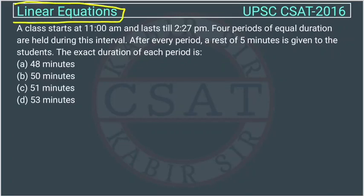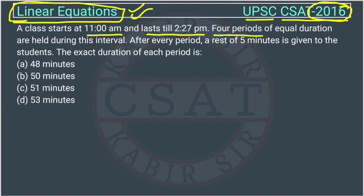This is a linear equation type of question asked by UPSC in the CSET exam of 2016. A class starts at 11 a.m. and lasts till 2:27 p.m. Four periods of equal duration are held during this interval. After every period, a rest of five minutes is given to the students. They are asking the exact duration of each period.